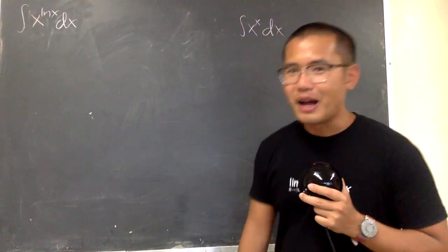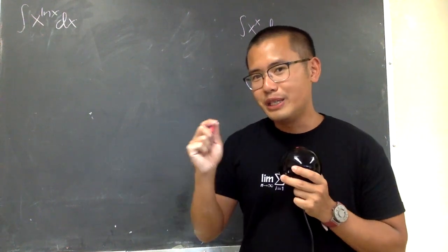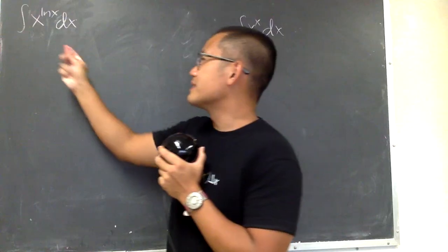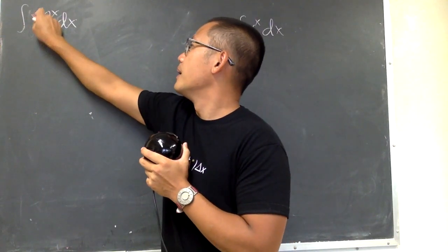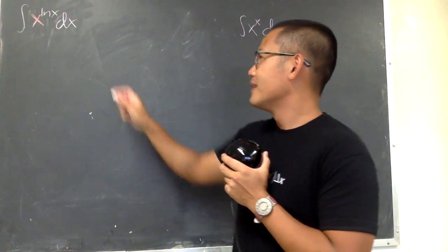Okay, now here we go. Let's take a look at how we can solve this. We have x to the ln x power already. In this case, we don't like to have the base being x. We like to have base e. So let's do the following.